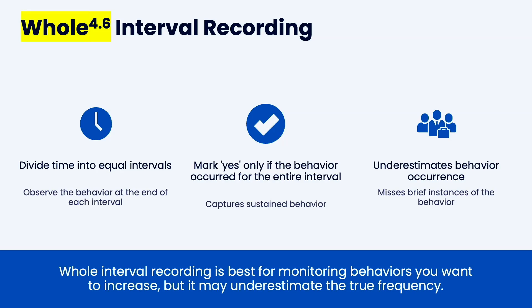For example, if you have a five-minute interval and the behavior is going and going, and then it stops for one second — you write no and you're done. Even if the behavior starts up again, you're still done with that interval. Similarly, if at the very start of the interval there's no behavior, it's a no — even if the behavior starts two seconds after. That's how it underestimates behavior: even if they engaged in behavior for most of the interval but stopped in the last two seconds, you mark it as no.